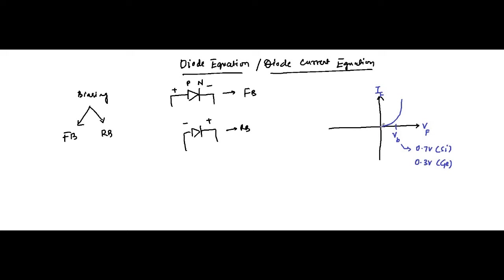In reverse bias mode, as the reverse voltage is increased, there is a sharp increase in current at a point called the zener breakdown voltage, which depends on the diode and is mentioned in its specification sheet. There is negligible current up to the zener breakdown voltage, which is comparatively higher than the built-in potential. After breakdown, the diode behaves as a constant voltage supply — the zener voltage.